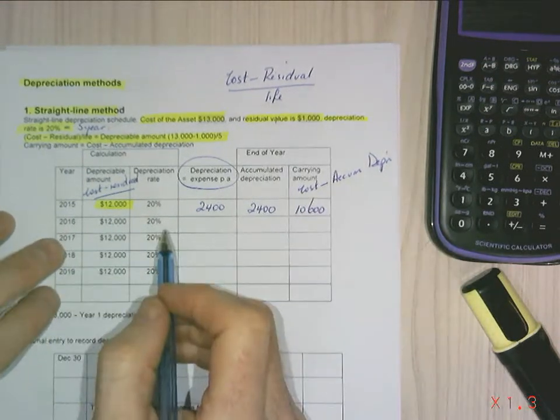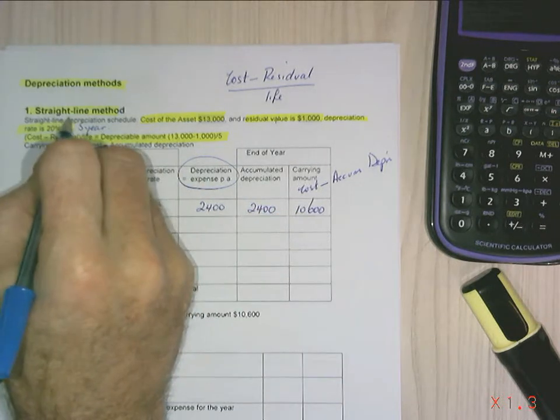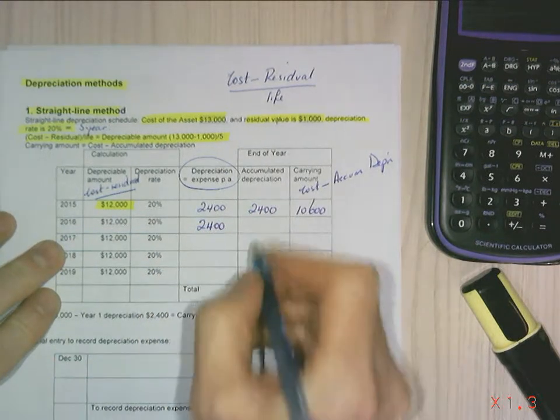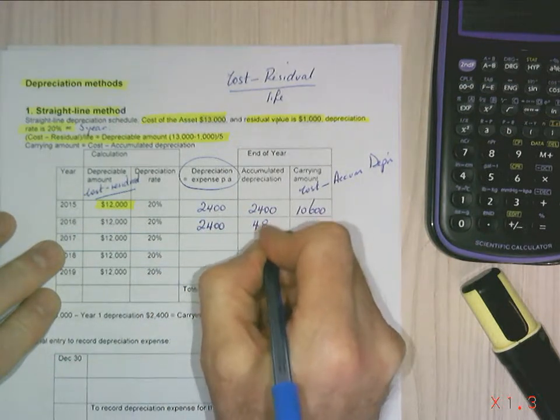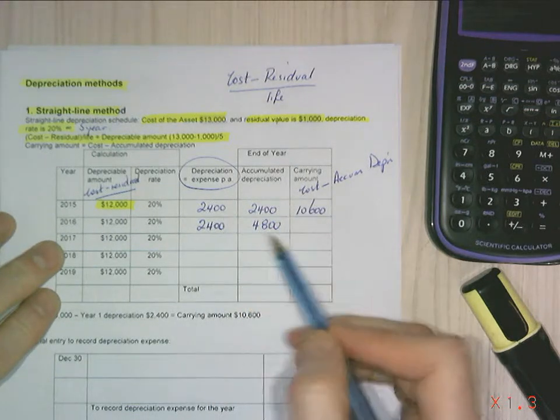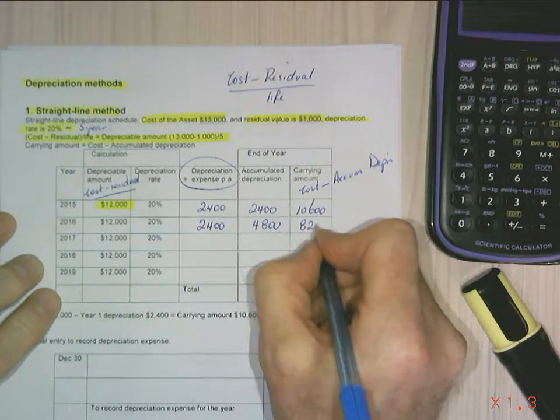Repeating the process for the second year, obviously my depreciation straight line, so I'm depreciating it again at $2,400 per annum. My accumulated depreciation increases, being the sum of the two depreciations, giving me $4,800. And my carrying amount is $8,200.